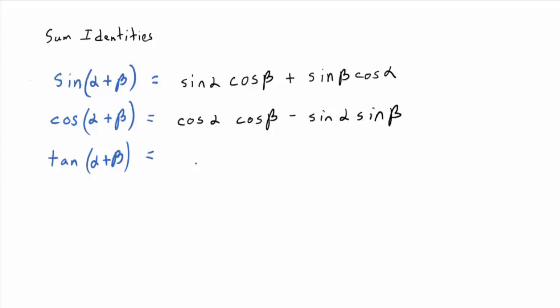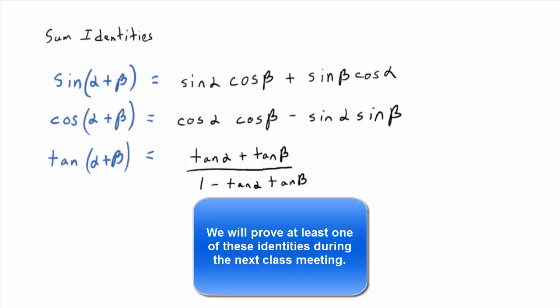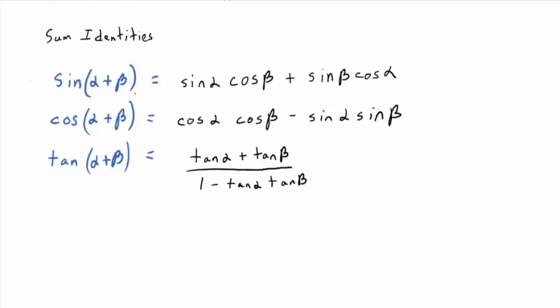The tangent of alpha plus beta starts out as tangent alpha plus tangent beta on top — it looks like the freshman's dream, like distribution. But the dream turns into a nightmare: it's actually that whole thing divided by one minus tangent alpha times tangent beta. So the freshman's dream is over on this one too. None of them look like what you'd like them to look like.